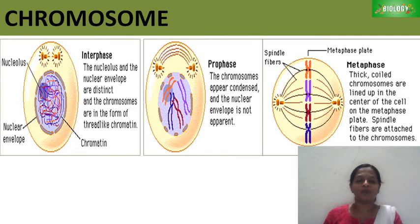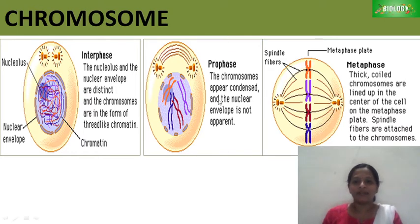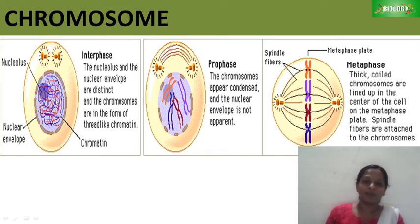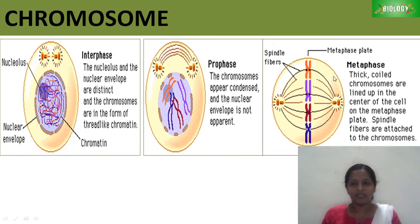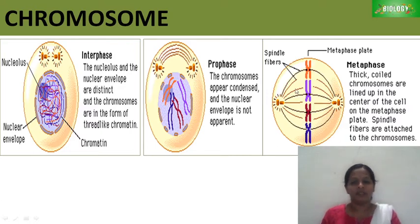In interphase, the chromosomes are in a thread-like structure. When the cell enters into prophase, the chromosomes appear condensed — the chromatin material starts to coil and becomes condensed. Then the cell enters into metaphase. In metaphase, thick coiled chromosomes are lined up in the center of the cell, and we can see the chromosome bundles very clearly.